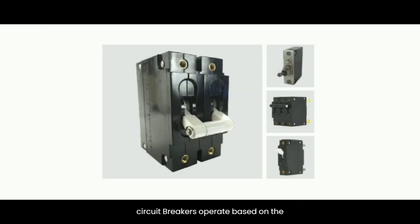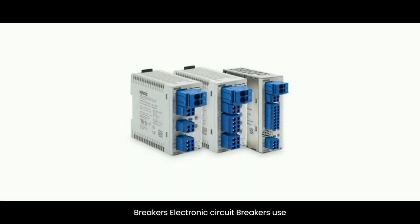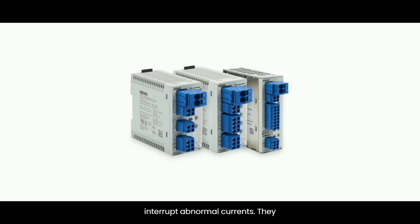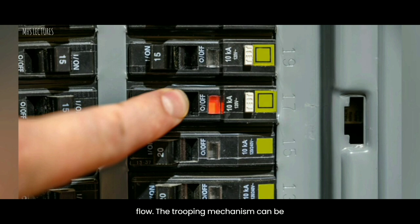Magnetic circuit breakers — operate based on the principle of electromagnetic induction, using a solenoid coil that creates a magnetic field; when a short circuit occurs, the excessive current activates the tripping mechanism. Hybrid circuit breakers — combine both thermal and magnetic elements to provide protection against a wide range of overcurrent conditions. Electronic circuit breakers — use solid state components such as transistors and sensors to detect and interrupt abnormal currents, offering precise and adjustable protection settings. The tripping mechanism can be mechanical, electromechanical, or electronic, depending on the type of circuit breaker.